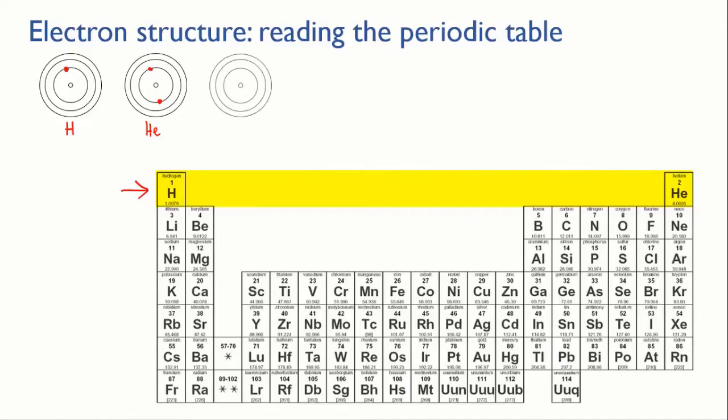When you get to lithium, it has three protons, so therefore it must have three electrons. So we put in the first two electrons. But then the first electron level can hold only two electrons, so the third electron must go into the next electron level, the second one. So that's why lithium is the beginning of the second row, or period.